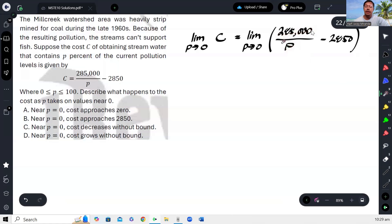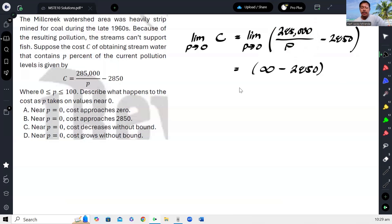Any number except 0 divided by 0 will give us infinity. So, this will actually approach infinity. Since it approaches infinity, subtracting any finite value will just give you infinity. So, that means as P approaches 0...